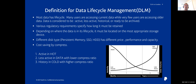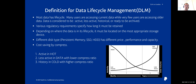Active data should be stored on very fast storage, so it can serve online users with very fast response time. When a user views historic data, it might be okay to take a few seconds to return that data. So historic data can be stored on cheaper, slightly slower storage devices.